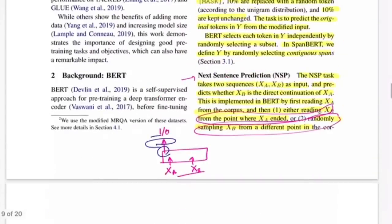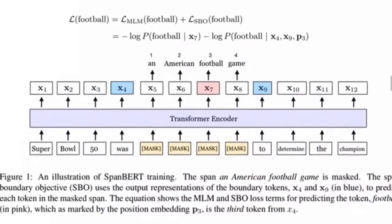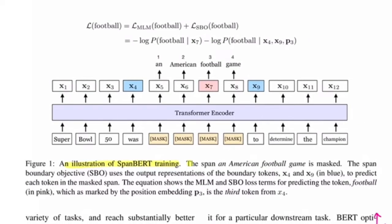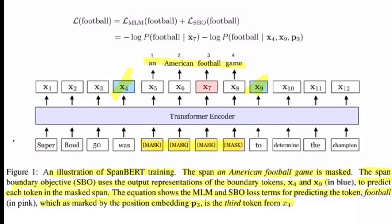This diagram illustrates how SpanBERT training works. The span 'an American football game' is masked — these are four contiguous mask tokens. The span boundary objective (SBO) uses the output representations of boundary tokens X4 and X9 (shown in blue) to predict each token in the masked span. The equation shows the MLM and SBO loss terms for predicting each masked token, where P3 is the third positional embedding.